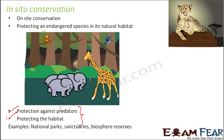Examples of in-situ conservation are national parks, sanctuaries, biosphere reserves, and deserts. These are all examples of in-situ conservation because the animals are living in their own natural habitat. We have not disturbed the animals at all but have put a boundary around that area and named it a national park.